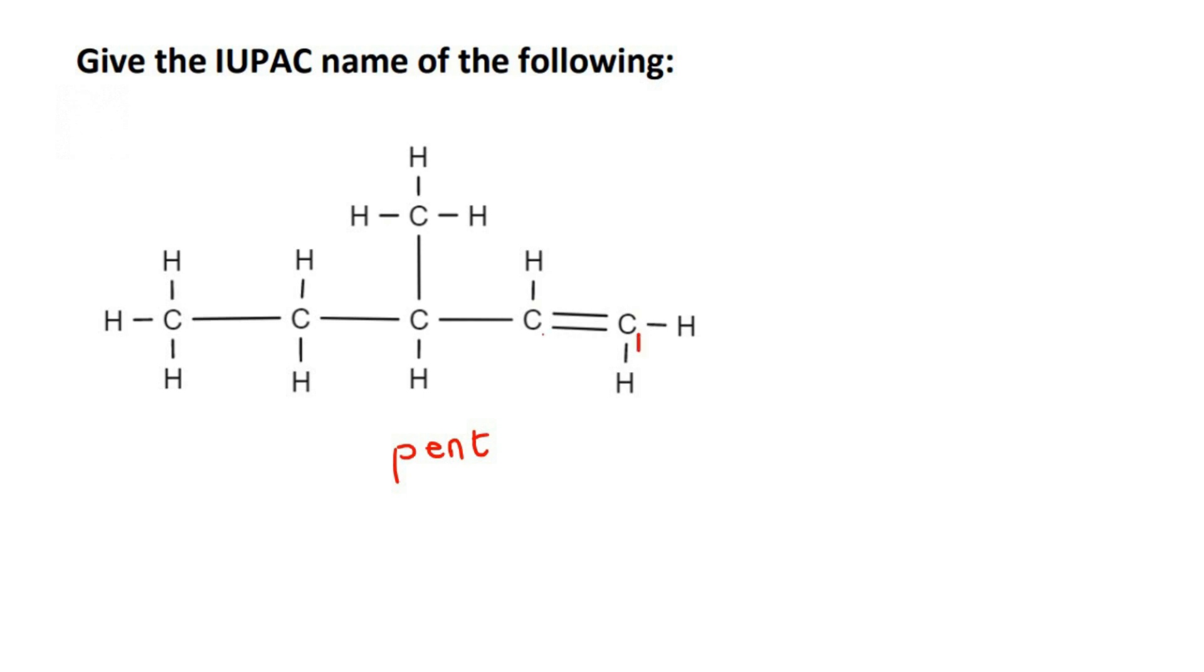So we're going to start here. So that'll be carbon one. That'll be carbon two. That'll be carbon three, four, and five. So here is a branch. So that's on carbon number three. How many carbons are in that branch? One. So that's meth.